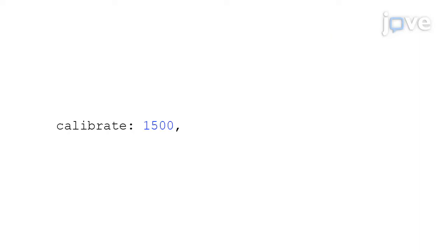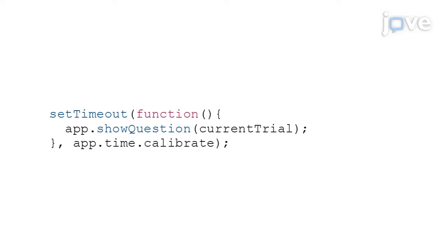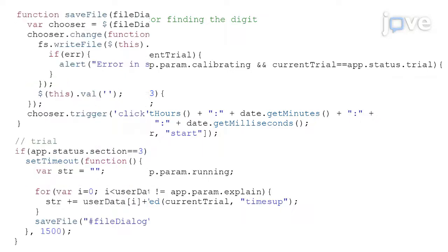Set the program to allow a time-lapse of 1.5 seconds after Enter is pressed before the display of the central fixation cross is switched to a trial image to begin a trial. Ensure that the screen will go blank with the fixation cross reappearing as the mouse is clicked or after 10 seconds have elapsed from the beginning of a trial, whichever is earlier. Then set the program to generate a CSV file that contains the time-stamps of the beginning and end of each trial.